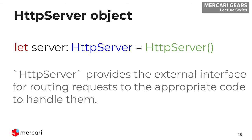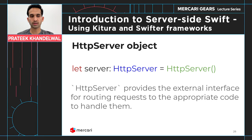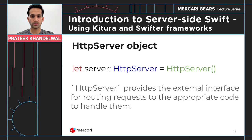For REST API connections in Swifter, instead of a router object like in Kitura, we have an HttpServer object. HttpServer is a class — we create an object of it, and it provides the external interface for routing requests to the appropriate code. Internally, it has an HttpRouter object, but we don't interact with the router directly. We can give closures or functions directly to the HttpServer object, which registers them to the internal router. The HttpServer class also provides subscript notation.